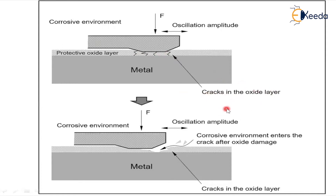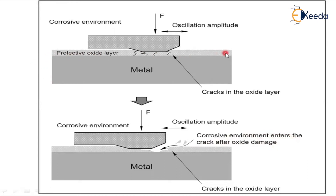After some time, because of this load, the crack opens — as you can observe in the second image. When the crack opens, the protective oxide layer is damaged, and the corrosive environment enters through the crack. This is why the protective oxide layer is very important and must be maintained to avoid corrosive damage.